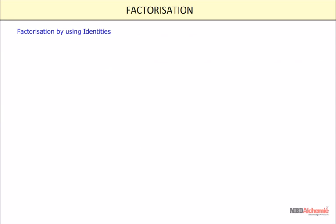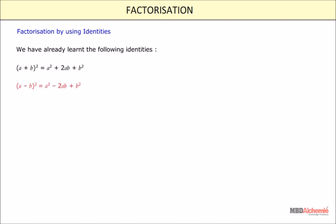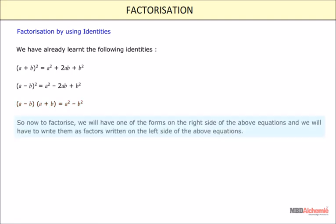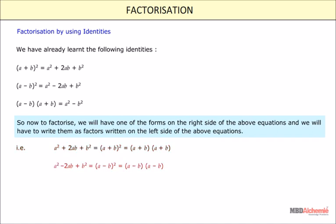Factorization by using identities. We have already learnt the following identities: a plus b whole square equals a square plus 2ab plus b square; a minus b whole square equals a square minus 2ab plus b square; and a minus b into a plus b equals a square minus b square. To factorize, we reverse these: a square plus 2ab plus b square equals a plus b whole square, also written as a plus b into a plus b; a square minus 2ab plus b square equals a minus b into a minus b; and a square minus b square equals a minus b into a plus b.